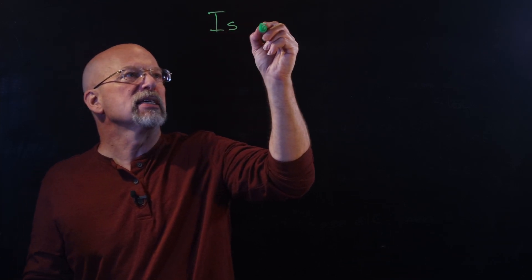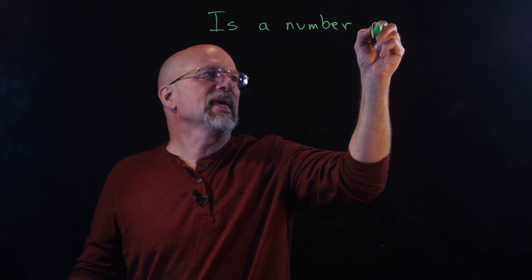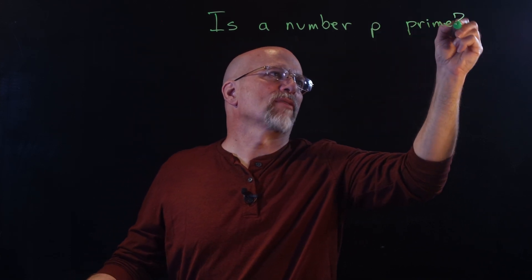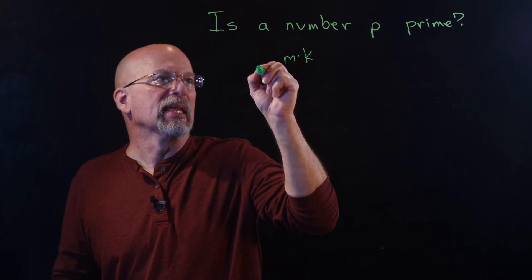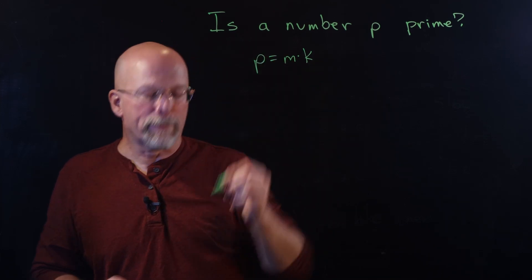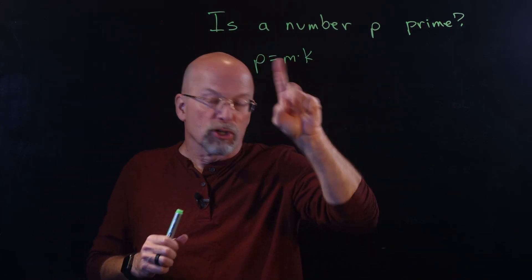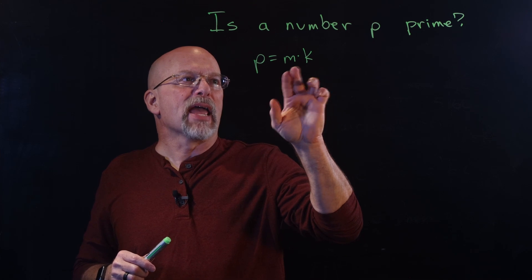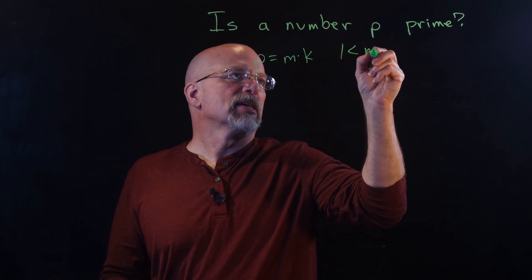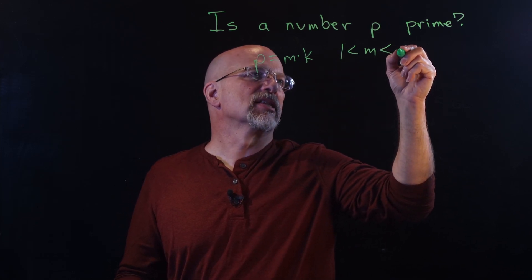The complexity of computing a prime number is a topic of conversation in many computing theory classes. The question is: is a number P prime? We're looking for integers M and K that multiply together to get P, where neither M nor K equals 1 or P — meaning M is greater than 1 and less than P.